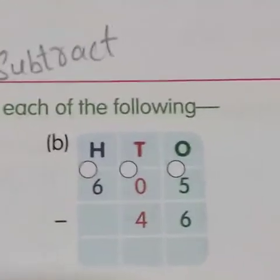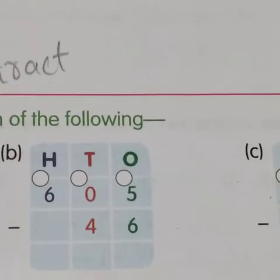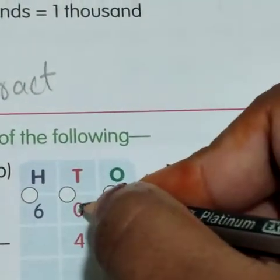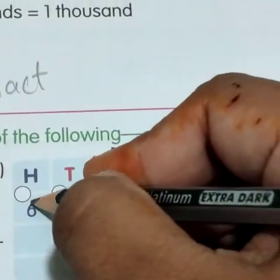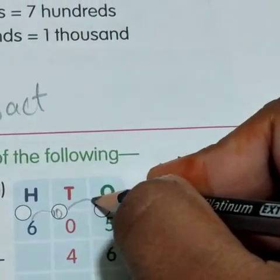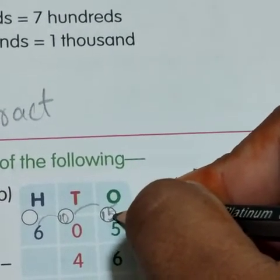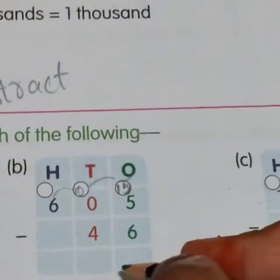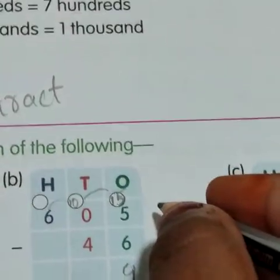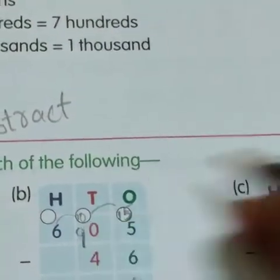The second question is 605 minus 46. So, 5 minus 6 we cannot do. We cannot take borrow from 0, so we have to take borrow from here. This will become 10. Again we have to take borrow from here, so this will become 15. 15 minus 6 is 9. As 10 has given borrow to 5, this will become 9.